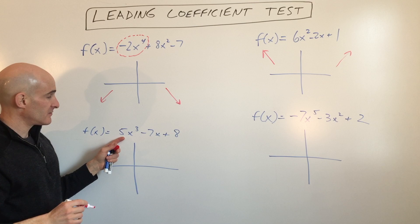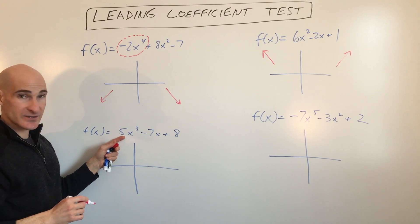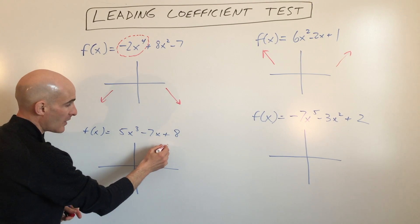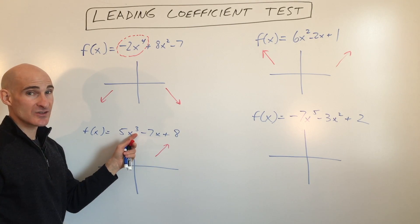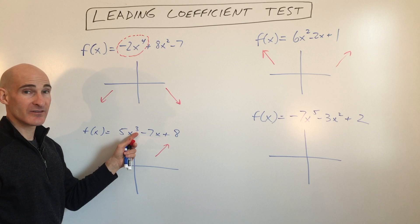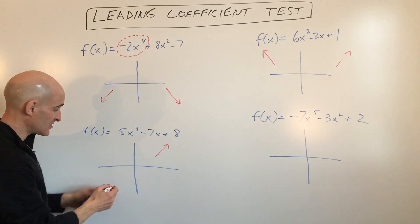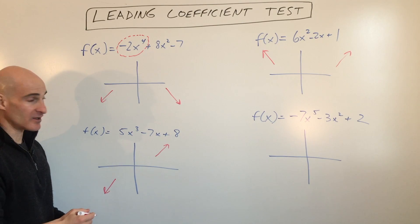This one over here, we've got a leading coefficient that's positive, so it's going to go up to the right, and it's an odd degree. When you think of odd degree, you think it's going the opposite direction, so that means it's going down to the left.